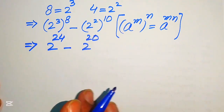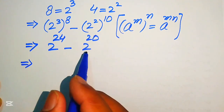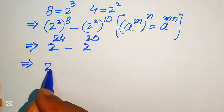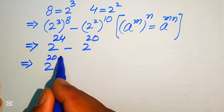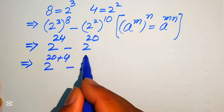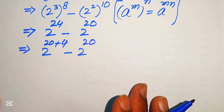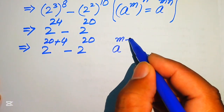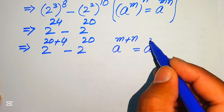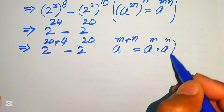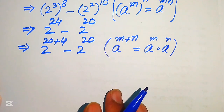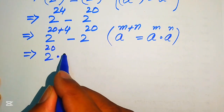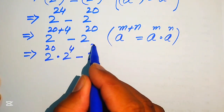In the next step we need more simplification. We break the exponent of the first term: we write 24 as 20 plus 4, giving 2 to the power of 20 plus 4, minus 2 to the power of 20. We apply the exponent law a to the power of m plus n equals a to the power of m multiplied by a to the power of n, so it becomes 2 to the power of 20, multiplied by 2 to the power of 4, minus 2 to the power of 20.